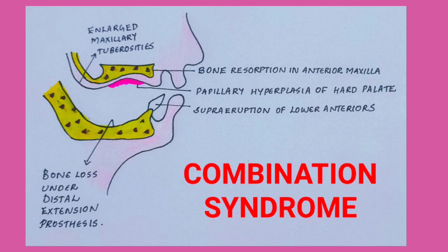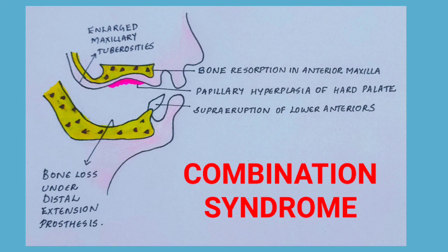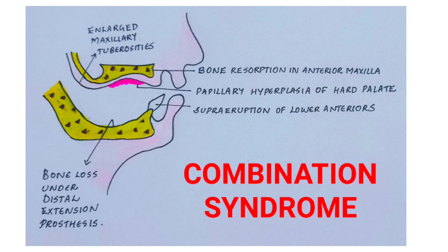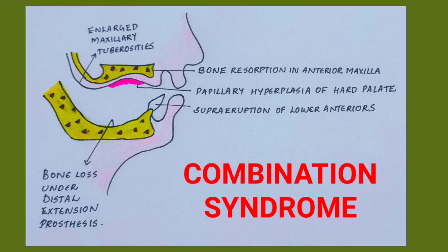The patient has an edentulous maxilla opposed by natural mandibular anterior teeth. The characteristic features observed are: first, there is loss of bone from the anterior maxillary region; also, there is overgrowth or downgrowth of the tuberosities; the hard palate mucosa shows papillary hyperplasia; in the lower anterior teeth there is extrusion; and loss of alveolar bone and ridge height is seen beneath the mandibular removable dental prosthesis. These characteristics together form what we call combination syndrome.